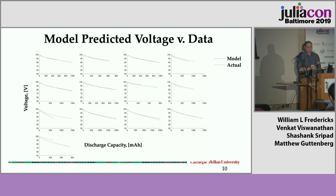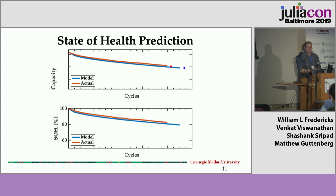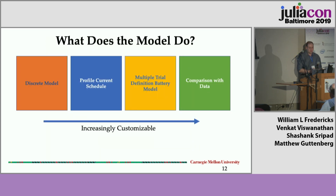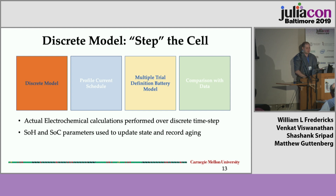This is what our data looks like — our model prediction on a bunch of different test sets. This is taking a while, but we can see that we're actually doing pretty well. We can also do a state of health, and again we do a pretty good job of capturing a lot of the physics that go on within the cycle test data. Our model also has these different compartments, which are customizable — this is where that battery model itself can actually go in and you can start to tune around with whatever you want to do. We use a state space model, so that's where this step really comes in.